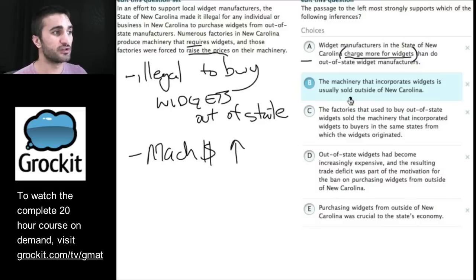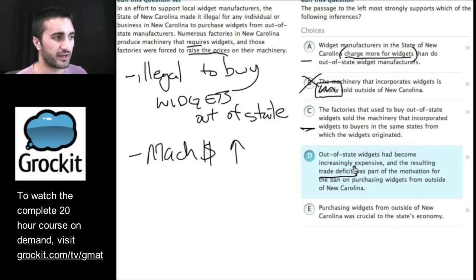Let's take a look at B. The machinery that incorporates widgets is usually sold outside of New Carolina. So, usually. Where can I support this word? I don't think I can. It seems kind of moldy. Let's get rid of it. The factories that used to buy out-of-state widgets sold the machinery that incorporated widgets to buyers in the same states from which the widgets originated. This is one of those answer choices that's trying to give me a headache by the time I'm done reading it. Usually, I just kind of leave them for now because I still have two other answer choices to read. How about D. Out-of-state widgets had become increasingly expensive and the resulting trade deficit. I'm pretty much done with this answer choice. Why does this have to be true? I can't point to it. It's not a paraphrasing of something in the passage. Great. Purchasing widgets from outside of New Carolina was crucial to the state's economy. Again, I don't feel like I can point to this crucial issue. So, I'm going to get rid of that.